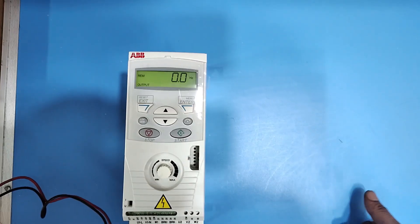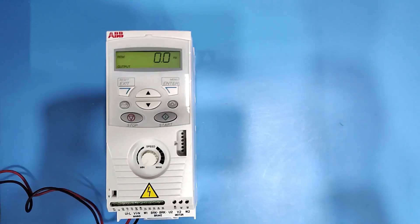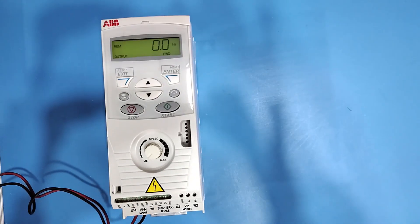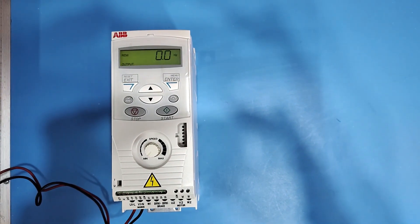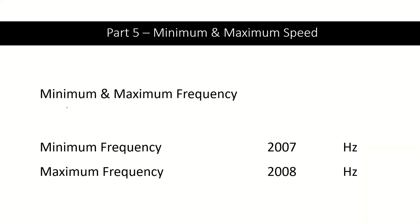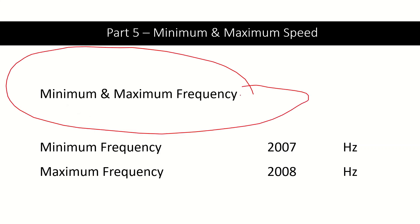These are the motor data parameters in the ABB ACS 150 drive. Next, set the maximum and minimum frequency. The relevant parameters are 2007 for minimum frequency and 2008 for maximum frequency.